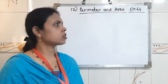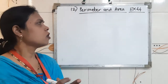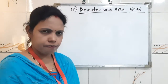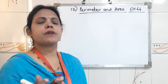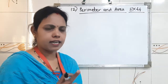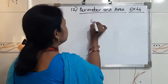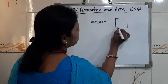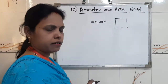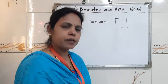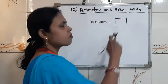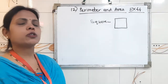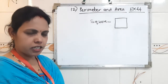So children, before starting, what do you mean by perimeter? Perimeter is the measurement of any diagram which is given. For example, if we take a square, how many sides are there? There are 4 equal sides. Then what will be the perimeter? The measurement of all 4 sides. Today we are going to study perimeter and area.